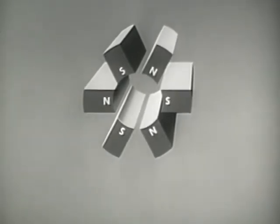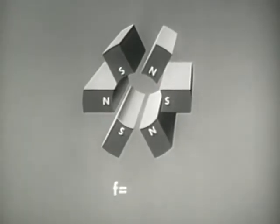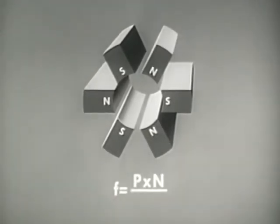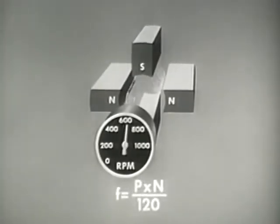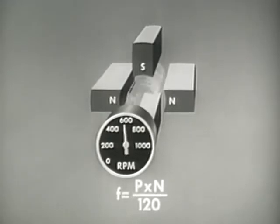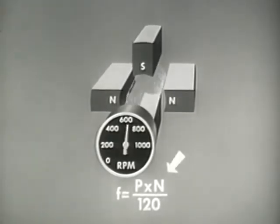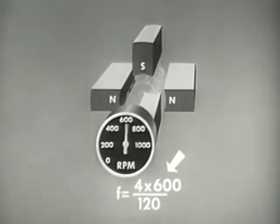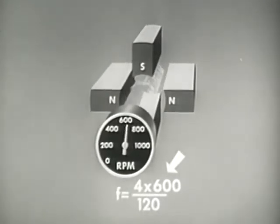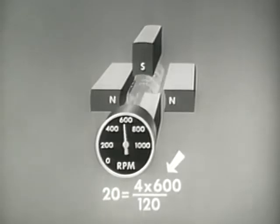The formula for frequency in an AC generator can be expressed as follows: F, which is frequency in cycles per second, equals P, the number of poles, times N revolutions per minute, over 120. We can find the frequency of a four-pole AC generator whose speed of rotation is 600 revolutions per minute by substituting 4 for P and 600 for N. Here, the frequency is 20 cycles per second.